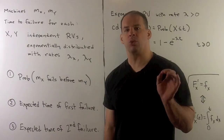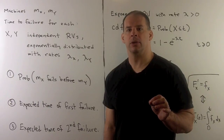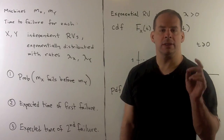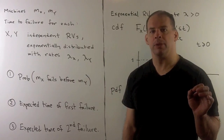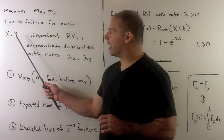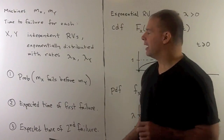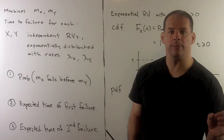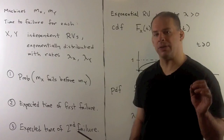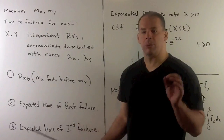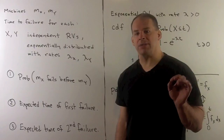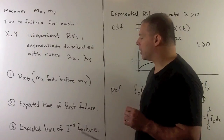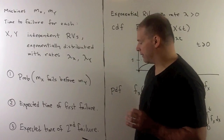Here's an example using exponential random variables. We have two machines, m sub x and m sub y, whose times to failure are exponentially distributed. We have two independent random variables with rates lambda sub x and lambda sub y. We want to find three things: the probability that m sub x fails before m sub y, the expected time of the first failure, and the expected time of the second failure.